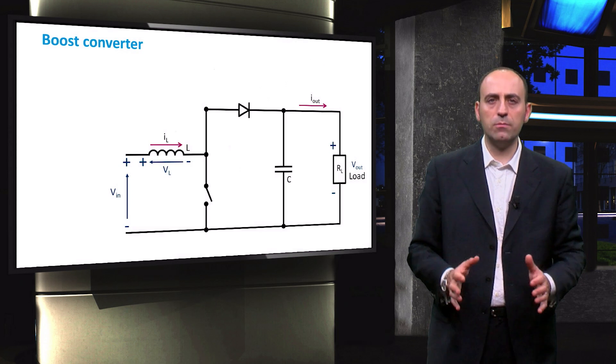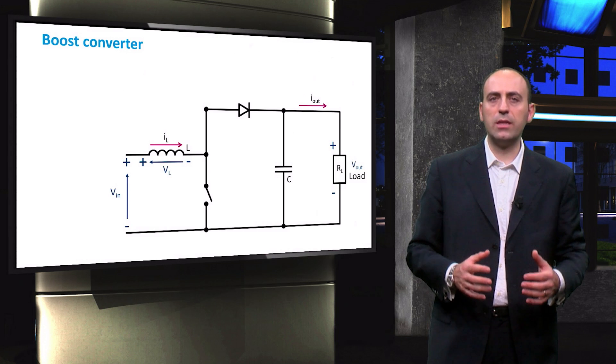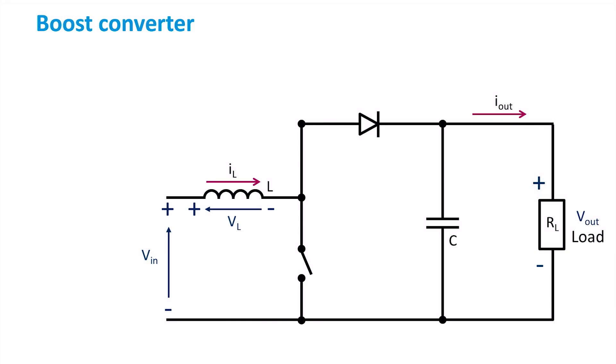The circuit of the simplest boost converter is similar to the step-down converter. We have the PV generator on the left, which is characterized by a certain input voltage VIN. You might have noticed that the coil is placed right next to it. The circuit includes a switch with a certain frequency, a flyback diode, and connected in parallel, there are the smoothing capacitor acting as a filter and the purely resistive load.